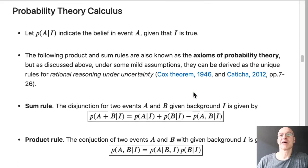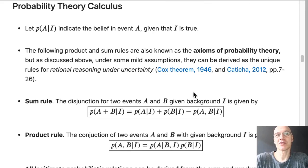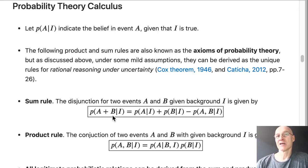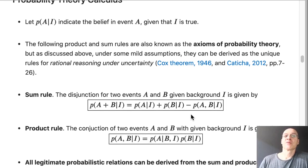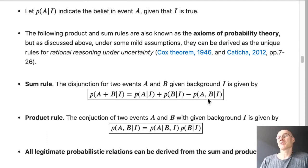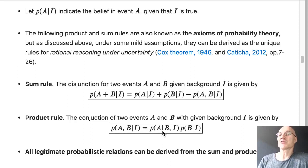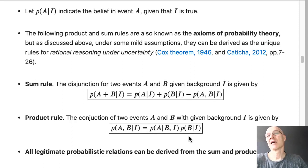The calculus of probability theory can be derived to be based on two rules: the sum rule and the product rule. The sum rule: the probability that A or B equals true, given some background I, is the probability that A is true plus the probability that B is true minus the probability that both A and B are true — all given background I. The product rule computes the probability that both A and B are true: it equals the probability that A is true given that B is true, times the probability that B is true.